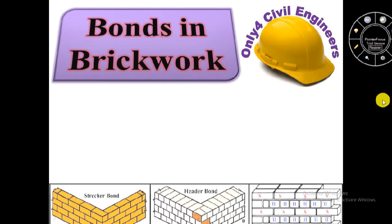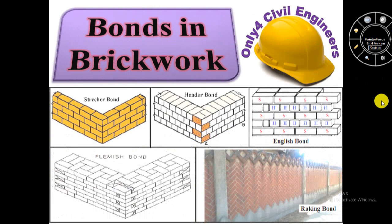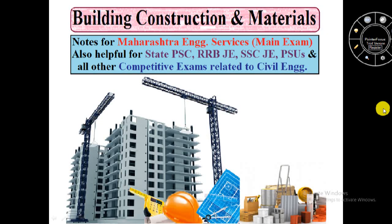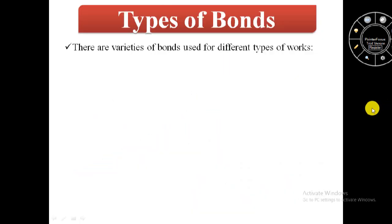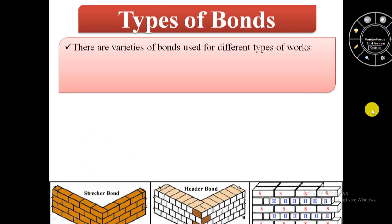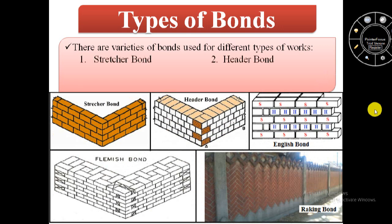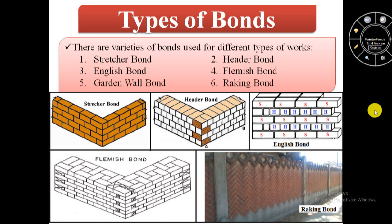Hello friends, welcome to my channel only for civil engineers. In this video we will discuss about bonds in brickwork, that is types of bonds. There are varieties of bonds used for different types of works, and these types of bonds are stretcher bond, header bond, English bond, Flemish bond, garden wall bond, and raking bond. In this video we will discuss all these types of bonds one by one in detail.